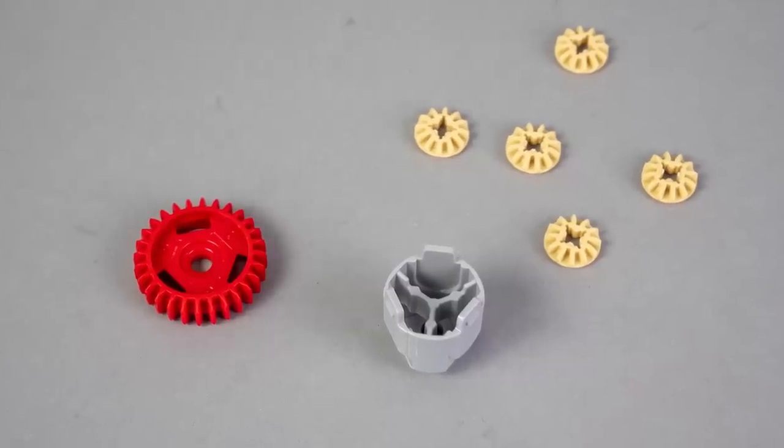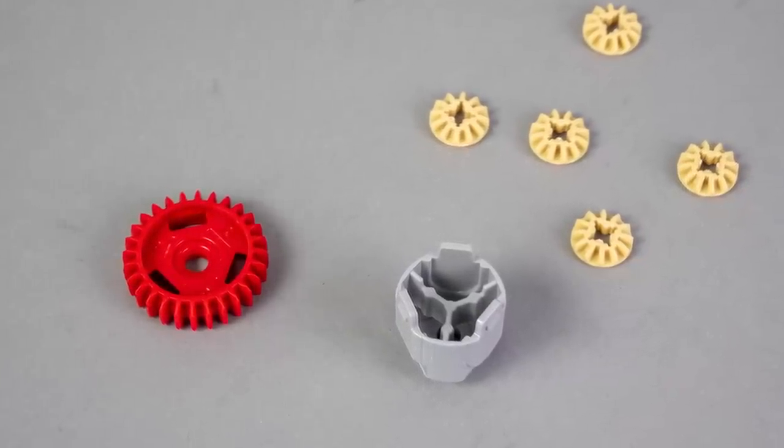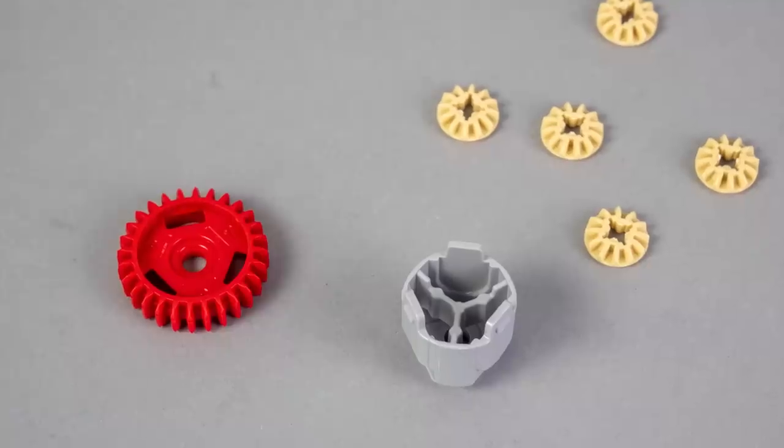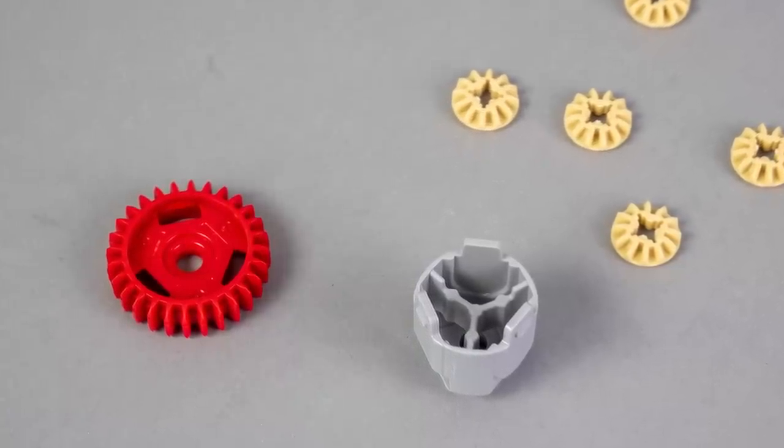A quick look at the differential itself. As you can see there are two separate parts: one of them is a red 28-tooth double beveled gear, and the other one is a barrel-shaped housing that holds five of the single bevel 12-tooth gears.